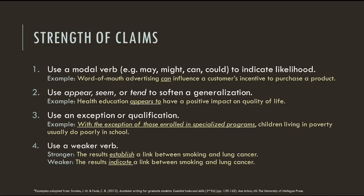As an academic writer, you also must exercise caution when making claims. The strength of your claims should match the evidence you've provided. In most cases, you should avoid making broad generalizations, and when appropriate, you should qualify your claims. John Swales and Christine Feek, in their book Academic Writing for Graduate Students, give several methods for moderating or qualifying claims. The first method is to use a modal verb, such as may, might, can, or could, to indicate likelihood. For example, saying that word-of-mouth advertising can influence a customer's incentive to purchase a product indicates that exceptions may exist. Eliminating the word "can" would increase the strength of that claim, and replacing it with "might" would decrease the strength of that claim.